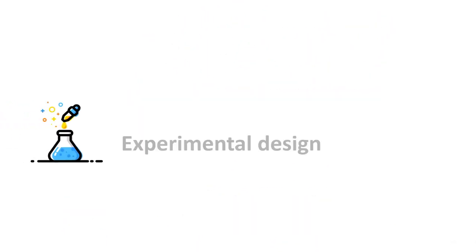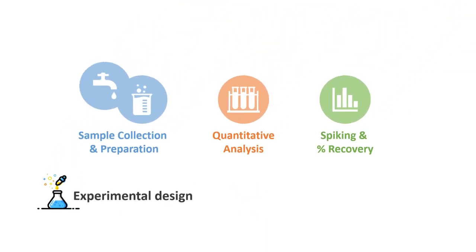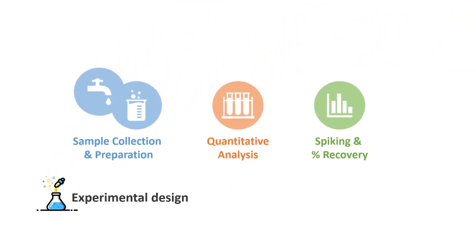In the final part of this e-lecture series, we took a closer look at the experimental design, where we learned how to collect and prepare the samples with nitric acid, how to perform quantitative analysis in ICP-AES using external calibration, and how to investigate the matrix interference by spiking the sample with multi-element standards and examining the percentage recovery for each of the elements of interest.